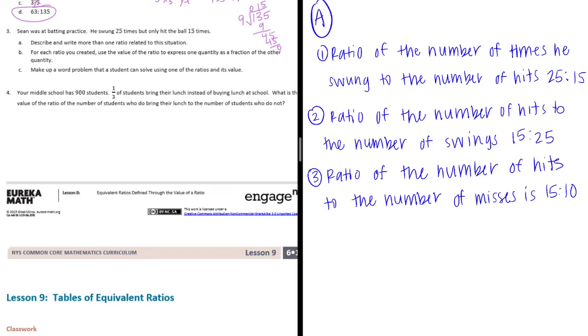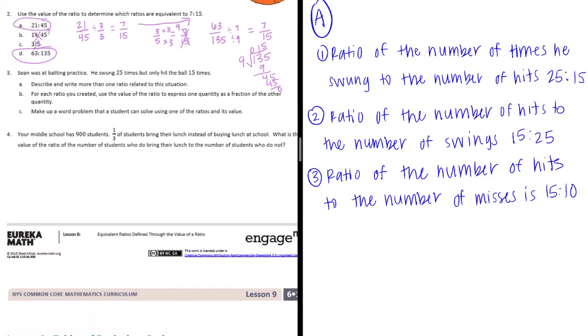Now part B wants us to, for each ratio you created, use the value of the ratio to express one quantity as a fraction of the other quantity. So we're going to take the first one, and it is 25 to 15. I'm going to write it as a fraction. And we're just going to find the value of that by putting it in the simplest form. So we can divide both 25 and 15 by 5, which would make this 5 thirds. So the value of that ratio is 5 thirds.